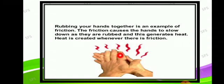So rubbing your hands together is an example of friction. The friction causes hands to slow down as they rub, and this generates — 'generates' means 'produce' — heat. While we are rubbing our hands, we can feel heat is produced. Heat is created whenever there is friction, so friction is the rubbing of two surfaces against each other.